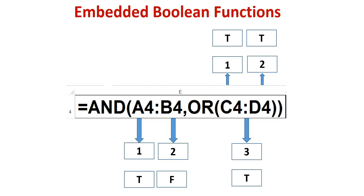So in this OR function, the first argument evaluated to true, the second argument evaluated to false, and the third argument evaluated to true. In the AND function, if we have one false value, the whole function will evaluate to false.